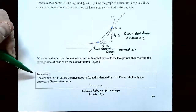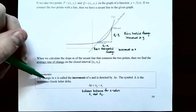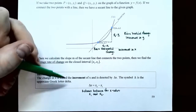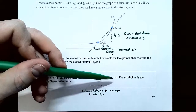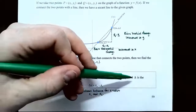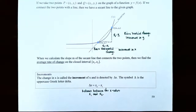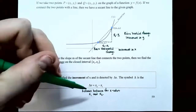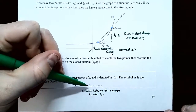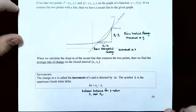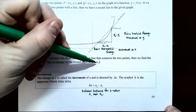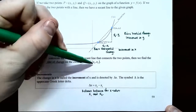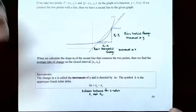Increments: the change in x is called the increment of x, denoted delta x, or change in x. Delta is the uppercase Greek letter meaning change. Delta x is just the difference between the x values — the ending value minus the starting value in the closed interval, so x2 minus x1.